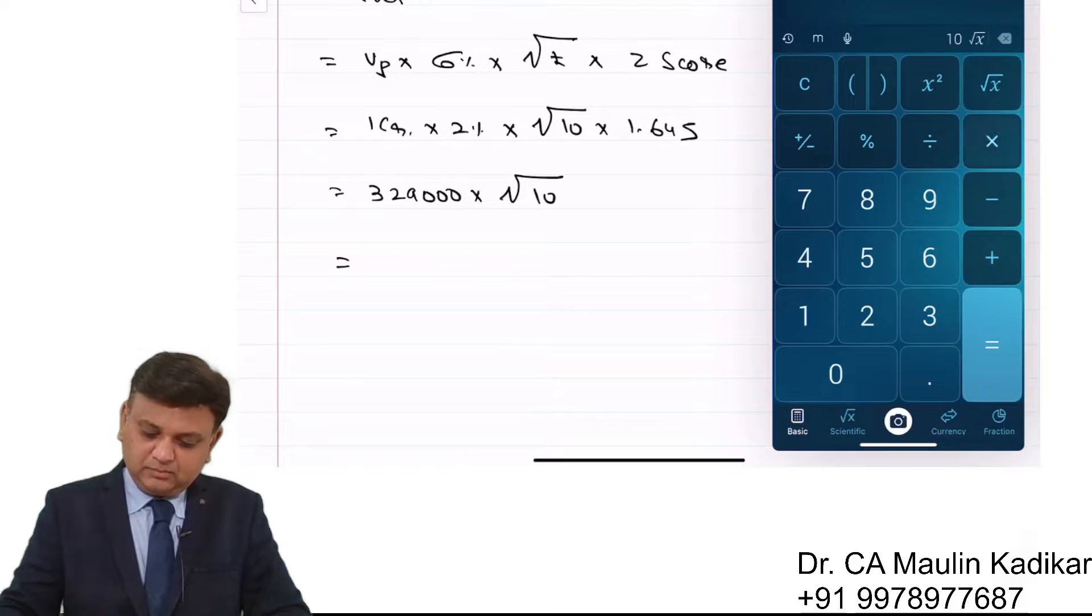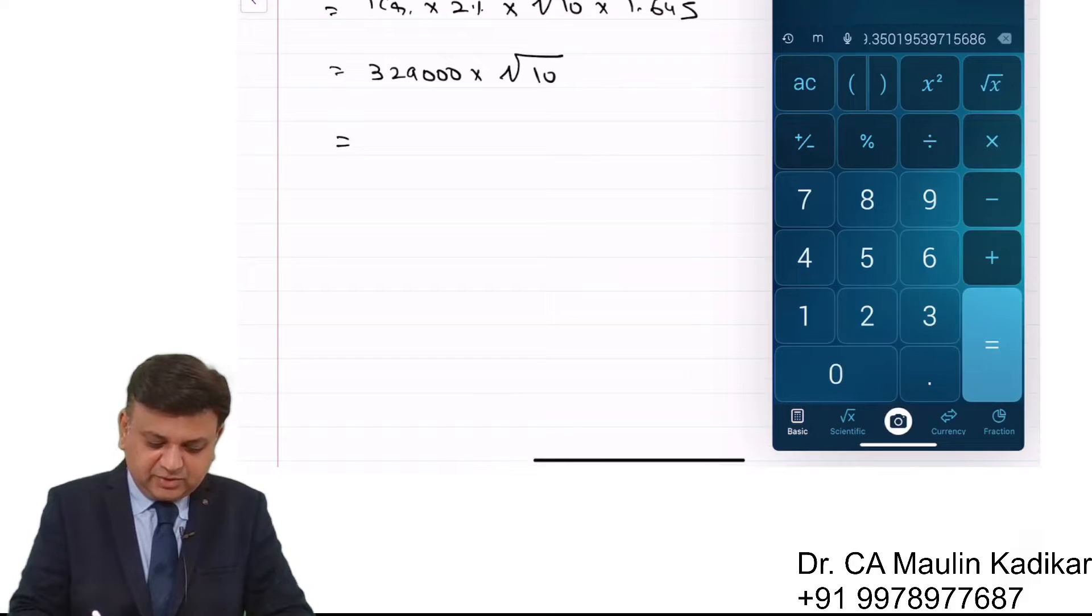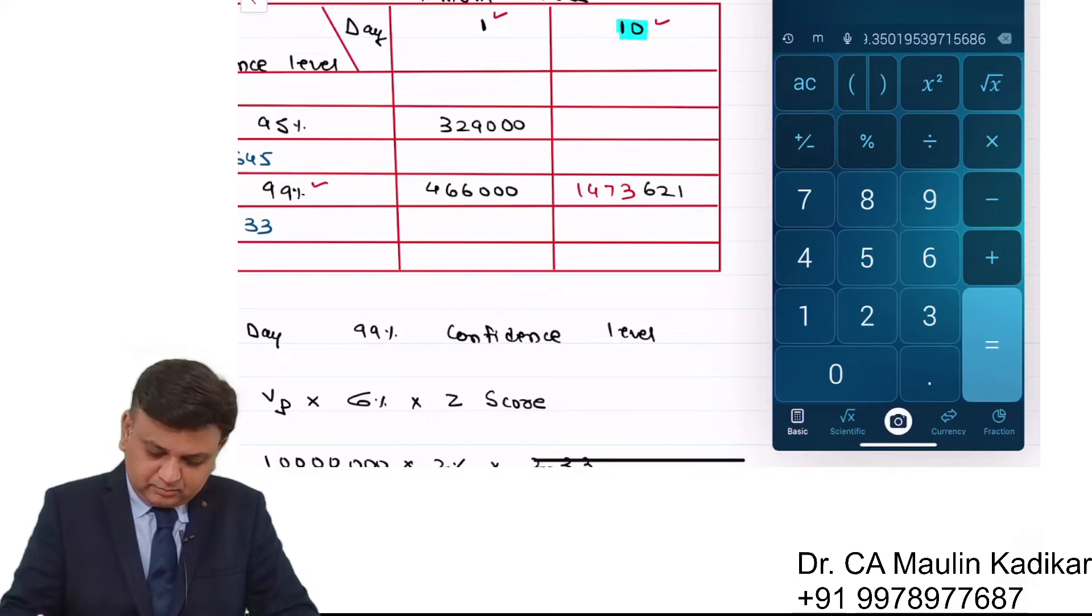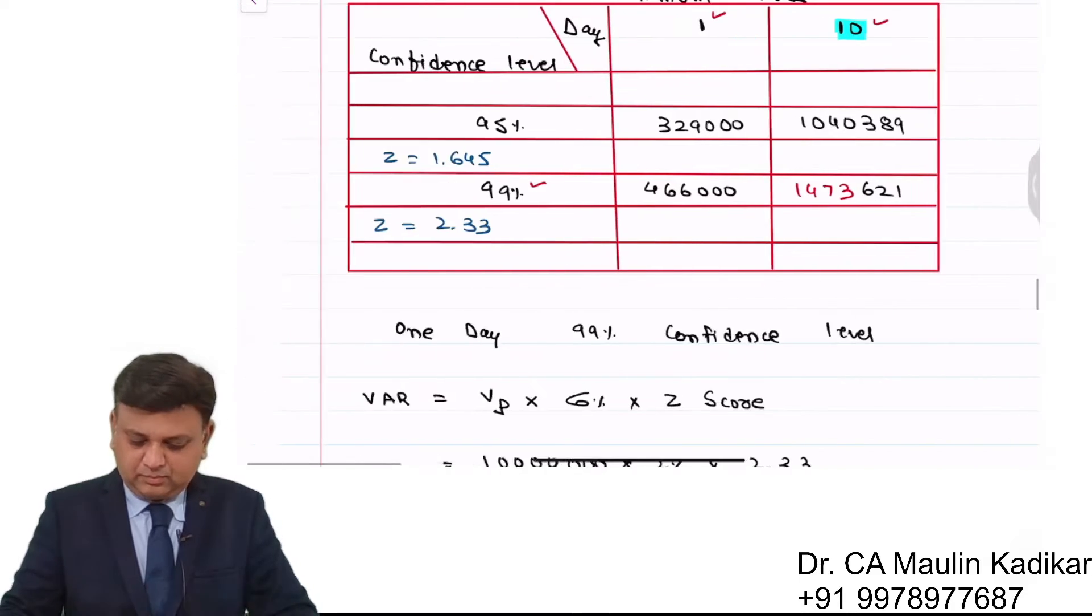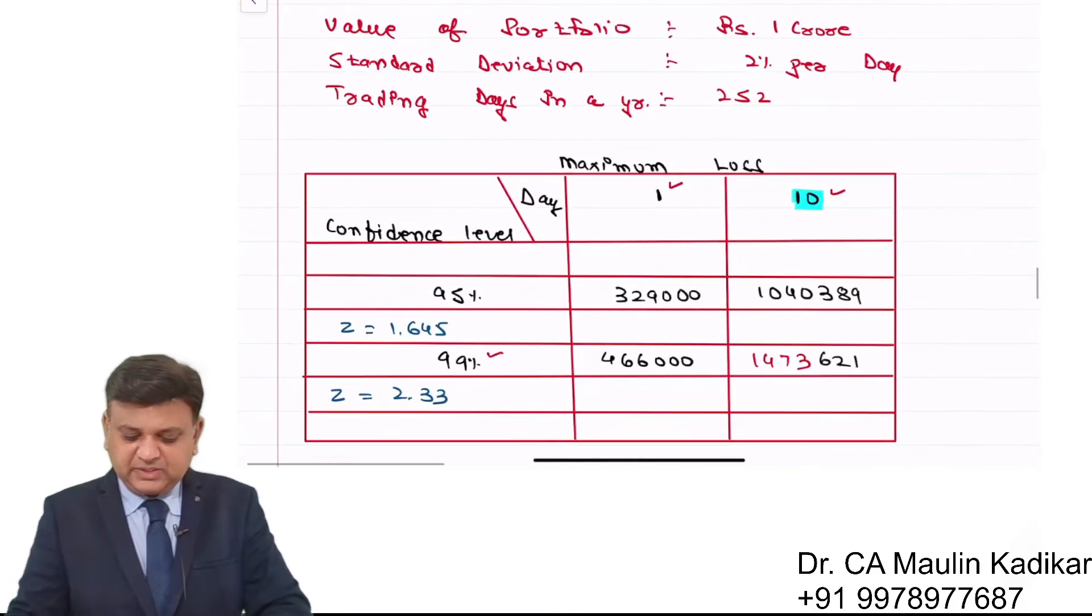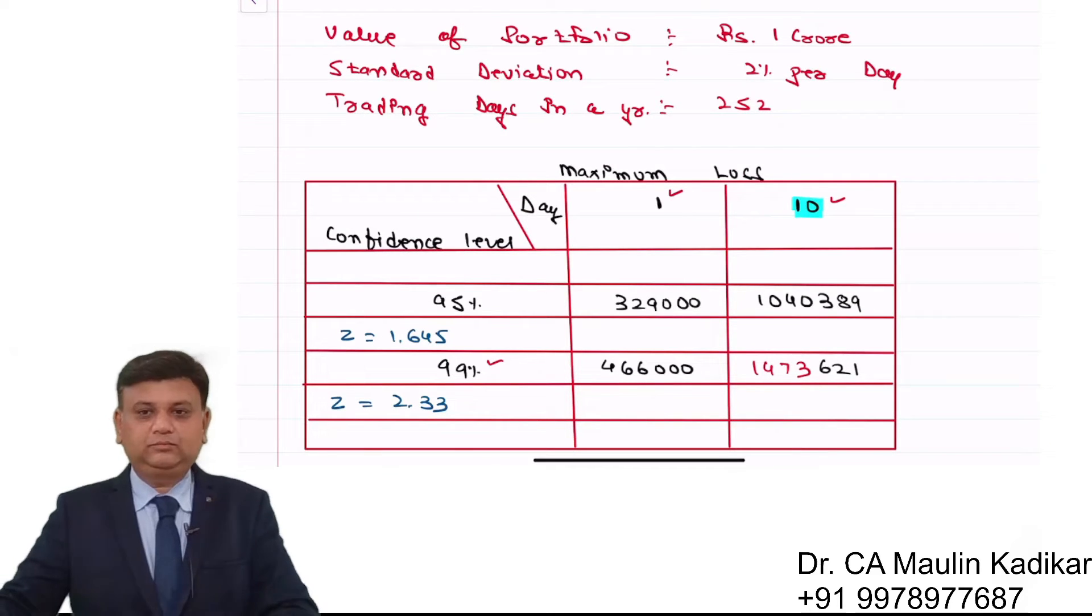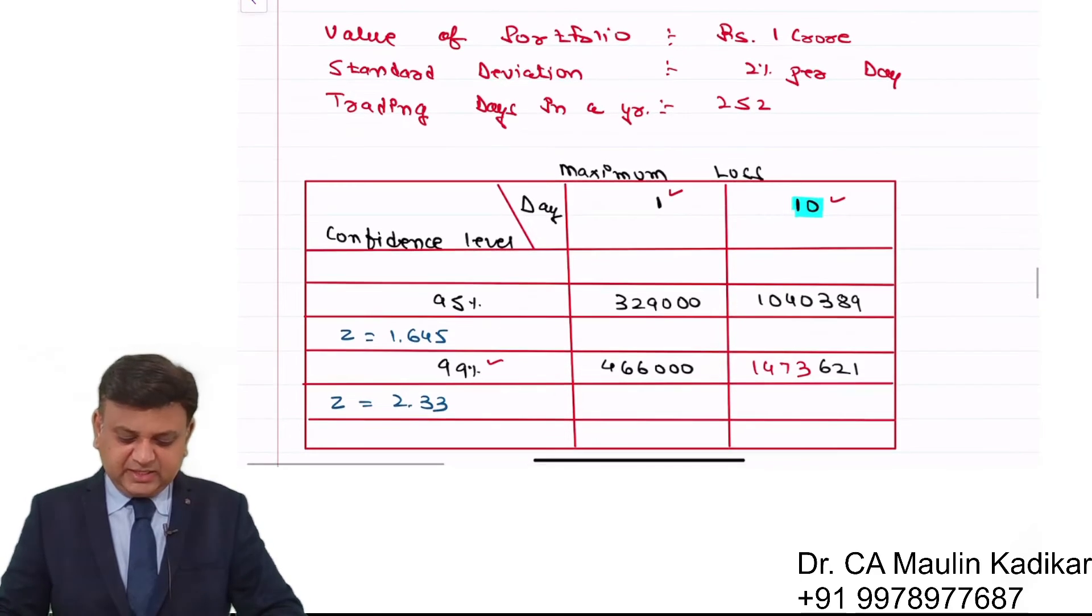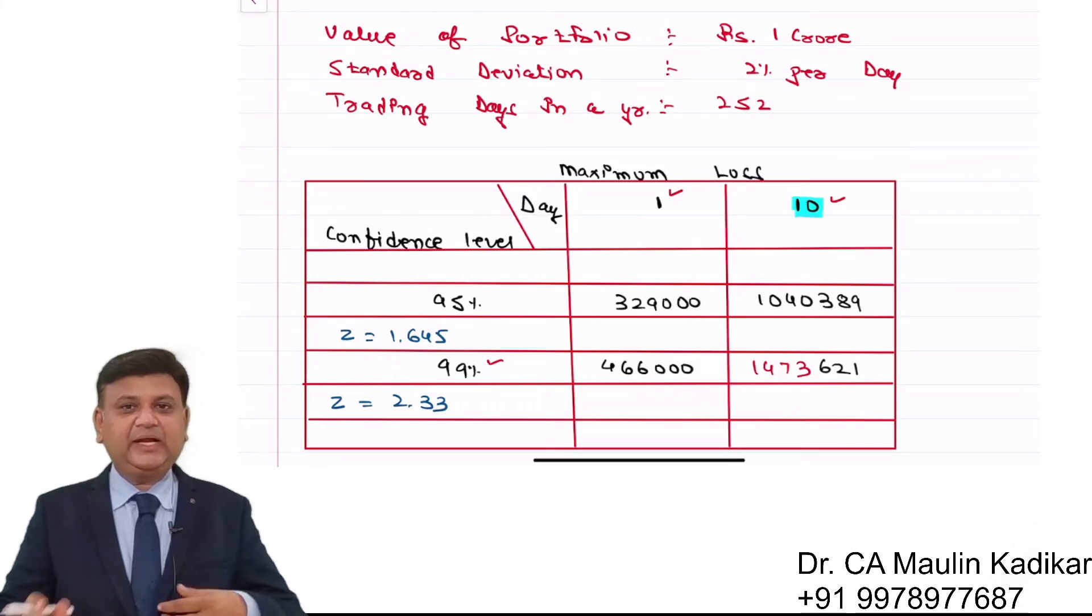So it is 10,40,389. Please write the answer. So this is the way we are required to make the calculation of 1 day and 10 days VAR with 95% and 99% confidence level.